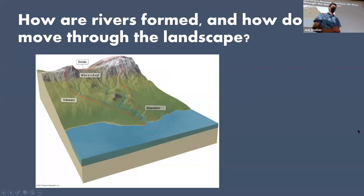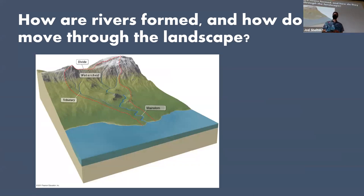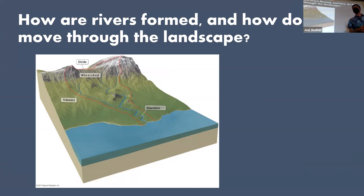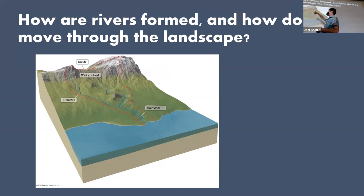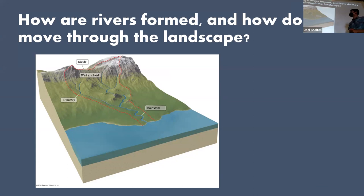We're going to be talking about some big picture questions here — big picture ideas. How are rivers formed, how they move through the landscape? We've got a picture of a cartoon of a river where it starts in the mountains. At the very top, we have the divide. We talked about the continental divide in the first week of class, and it's just through the Rocky Mountains.